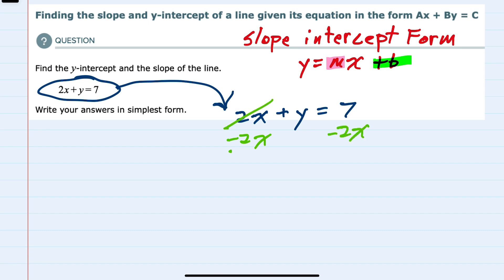That will cancel the 2x on the left hand side and leave me with y equals minus 2x plus 7.